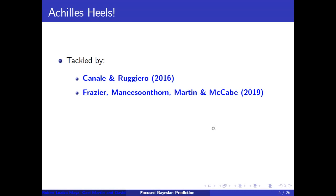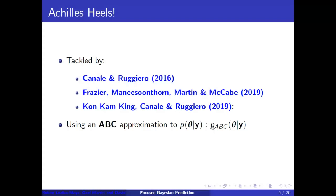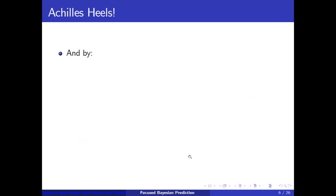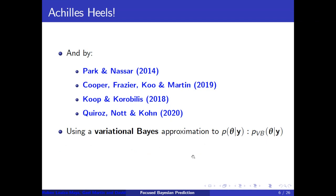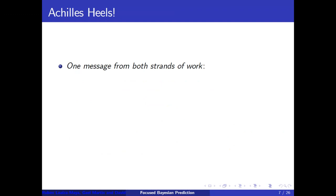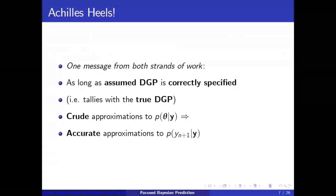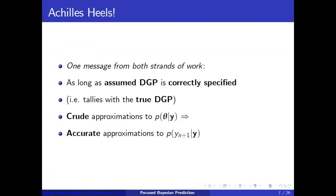That's the sort of problem that we and others have tackled in other work, where we use an ABC approximation to the exact posterior and thereby produce an ABC-based approximation of the exact predictive. We've also moved on to using a variational Bayes approximation to the exact posterior, producing a variational Bayes-based approximation to the exact predictive. A key message from both of these strands of work is that as long as the assumed data-generating process is correctly specified — tallying with the process that actually generated the data — then pretty crude approximations to the exact posterior can still lead to accurate approximations to the exact predictive.